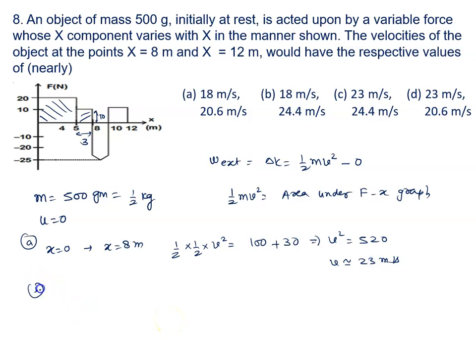Now we will calculate part (b), from x = 0 to x = 12 meters. Again, (1/2)mv², that is (1/4)v², equals the area under the graph. First areas we calculated: 100, then 30. Then this is the negative side. We will calculate this in two segments: one rectangle and one triangle.